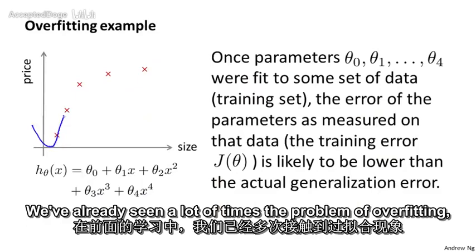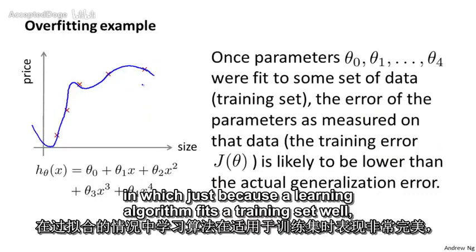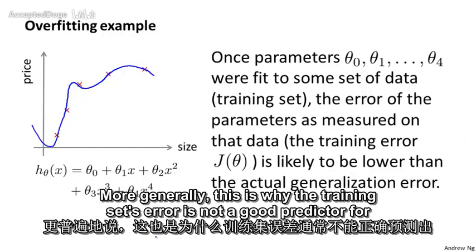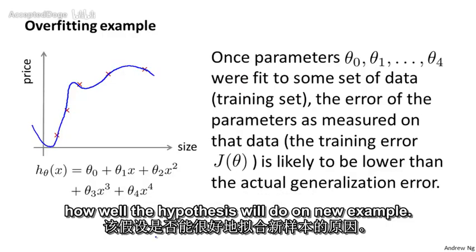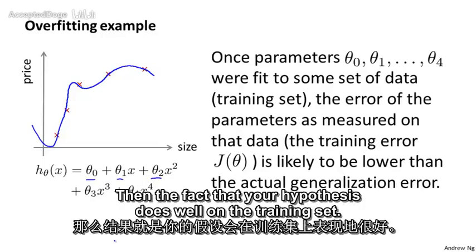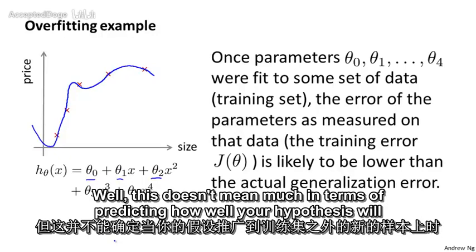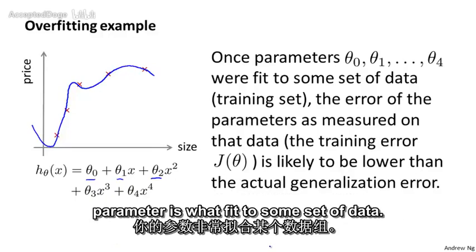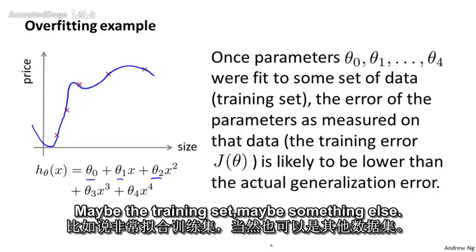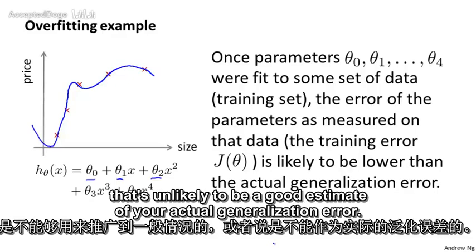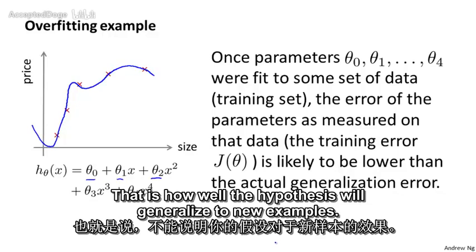We've already seen the problem of overfitting, in which just because the learning algorithm fits a training set well, that doesn't mean it's a good hypothesis. More generally, the training set error is not a good predictor for how well the hypothesis will do on new examples. If you fit parameters theta 0, theta 1, theta 2, and so on to your training set, the fact that your hypothesis does well on the training set doesn't tell us much about how well it will generalize to new examples not seen in the training set. The error measured on the same data used to fit the parameters is unlikely to be a good estimate of actual generalization error.